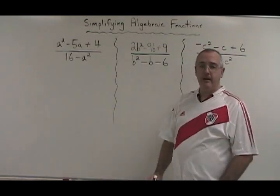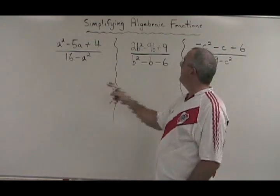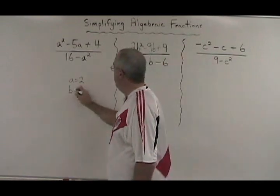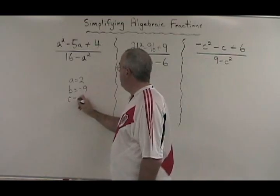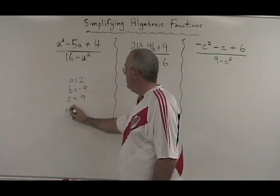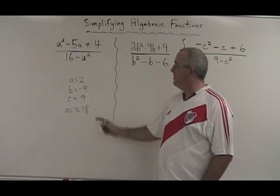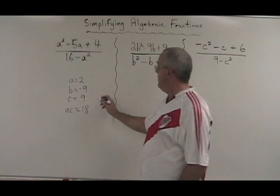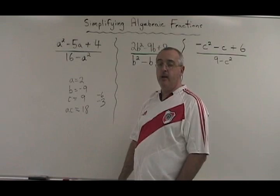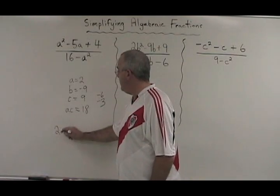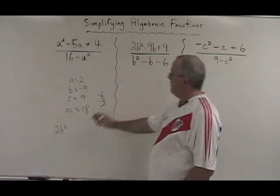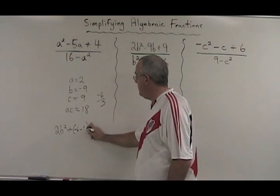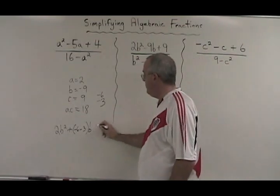The first step is to factor. I'm going to factor this numerator over here. A equals 2, B equals negative 9, C equals 9, and the product AC equals 18. What two numbers multiply to give 18, but add to give negative 9? Those numbers are negative 6 and negative 3. We rewrite our trinomial, 2B squared plus bracket, and we will write negative 6 minus 3 inside the bracket plus 9, B plus 9.